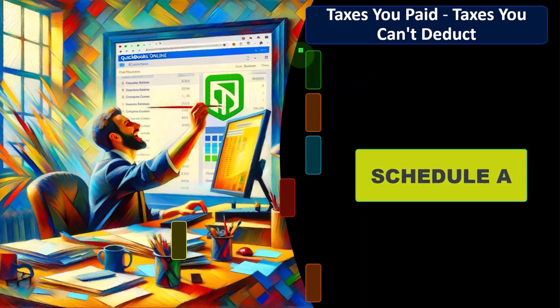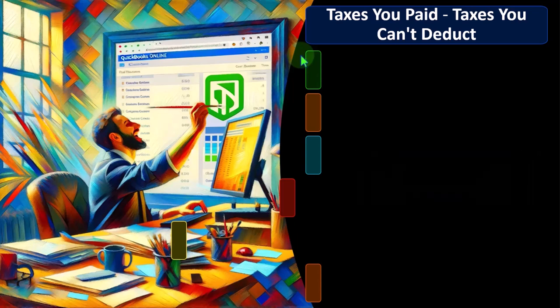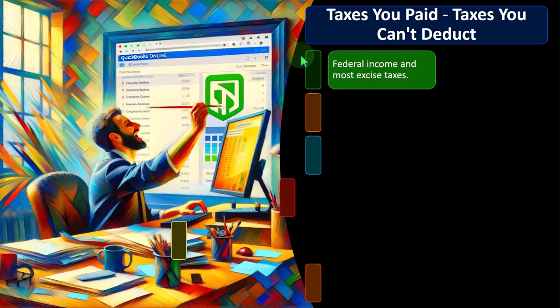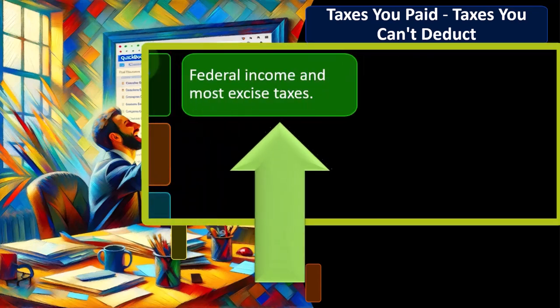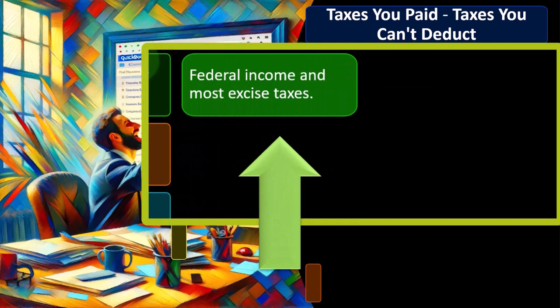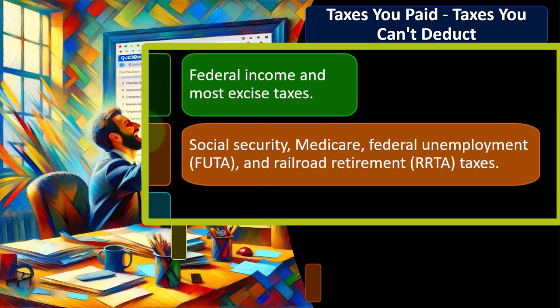Here's a general overview. Taxes you paid, taxes you can't deduct: federal income and most excise taxes. Clearly you can't deduct federal income taxes on your own federal tax return — that would result in a circular reference. You also can't deduct Social Security, Medicare, federal unemployment, FUTA, and railroad retirement, RRTA.